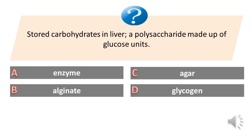Stored carbohydrates in the liver, a polysaccharide made up of glucose units. A. Enzyme. B. Alginate. C. Agar. D. Glycogen. Answer is D. Glycogen.